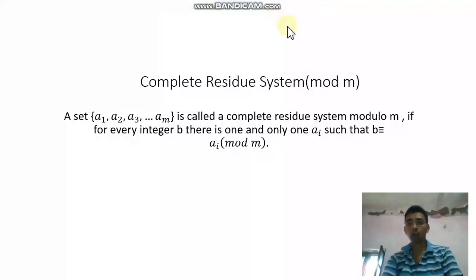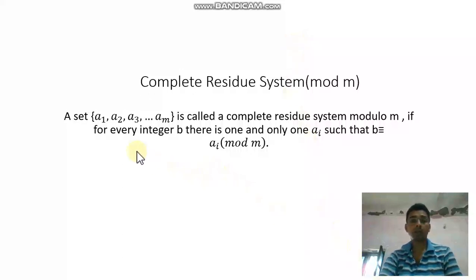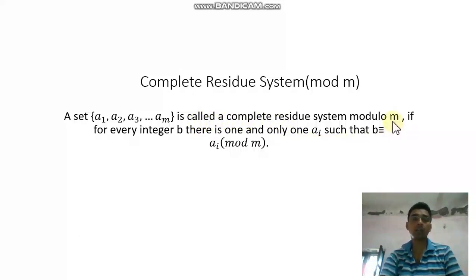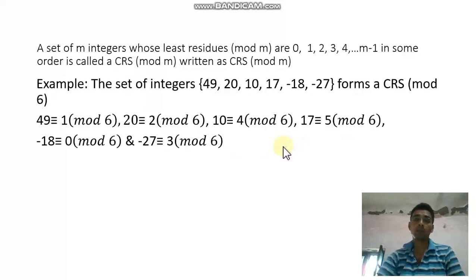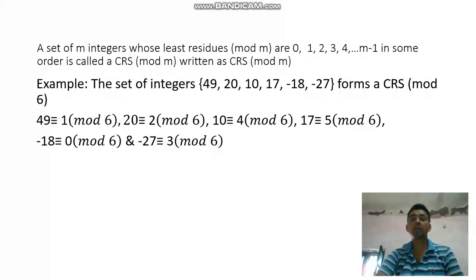Today I am going to discuss complete residual system. A set {a1, a2, a3, ..., am} is called a complete residual system mod m if for every integer b there is one and only one ai such that b is congruent to ai mod m. A set of m integers whose least residues mod m are 0, 1, 2, 3, 4, up to m-1 in some order is called a complete residual system mod m, or written as CRS mod m.